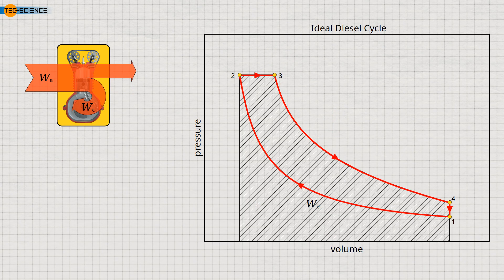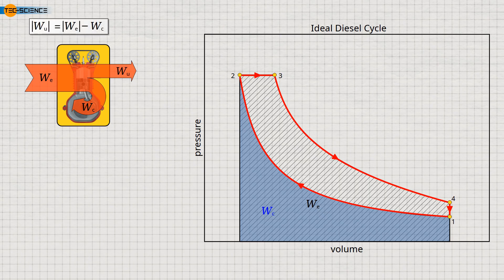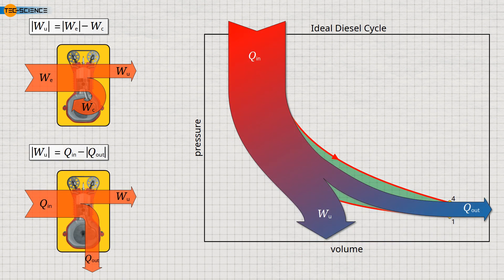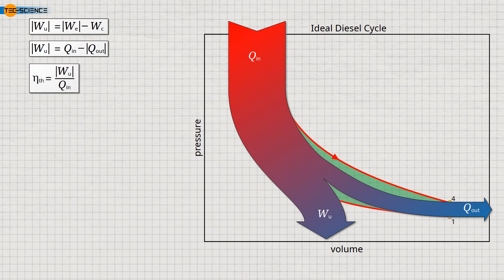The work required to compress the intake air is determined as the area under the compression curve. Again, the difference between the expansion and compression work is the useful work effectively done by the crankshaft. In the diagram, this is shown as the enclosed area within the cycle. However, this useful work can also be determined much more easily by the difference between the heat supplied and the heat rejected. Note that in the diesel cycle, the heat input is isobaric, unlike the gasoline cycle where the heat input is isochoric. The thermal efficiency as the ratio of useful work to supplied heat energy describes the efficiency with which the heat energy is converted during the combustion process into useful work.